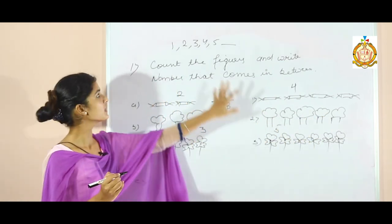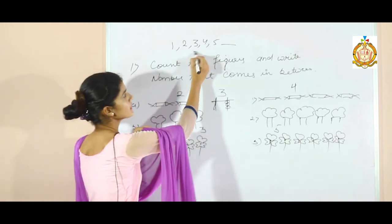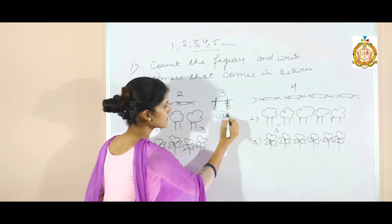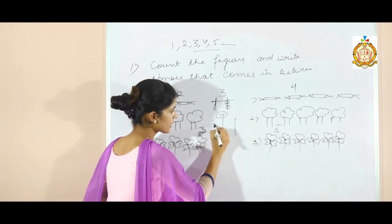Which number comes in between 3 and 5? 3 and 5. Which number comes between 3 and 5? 4 comes in between 3 and 5. So, you have to draw 4 beads.